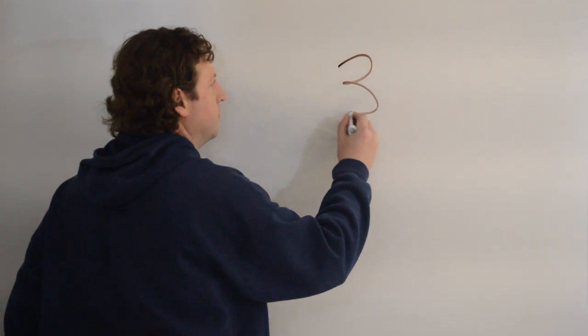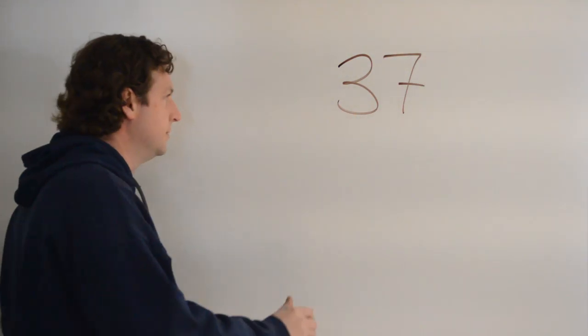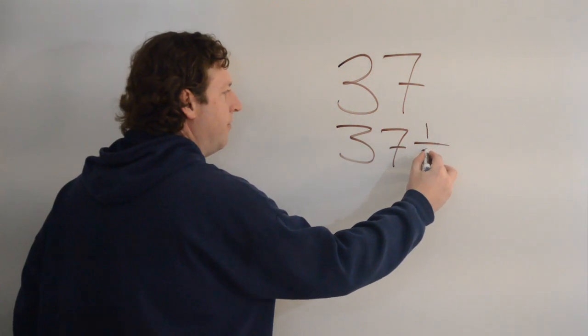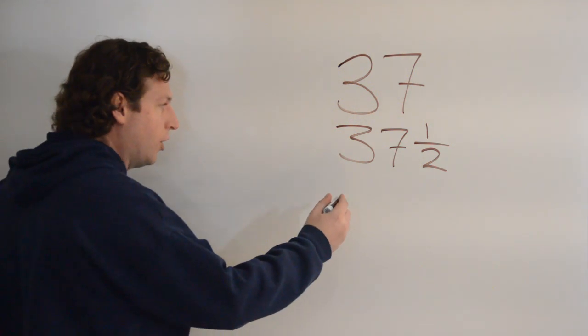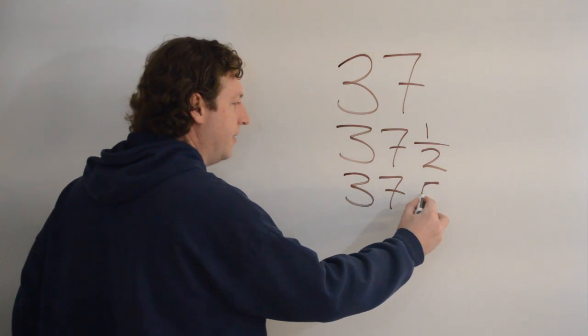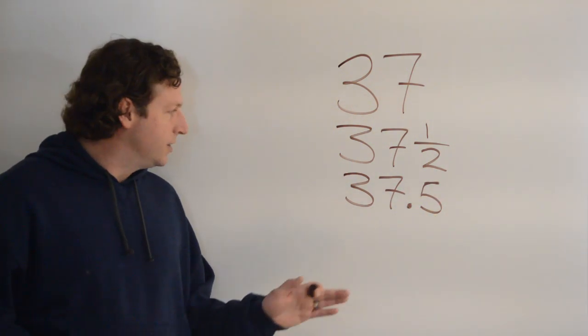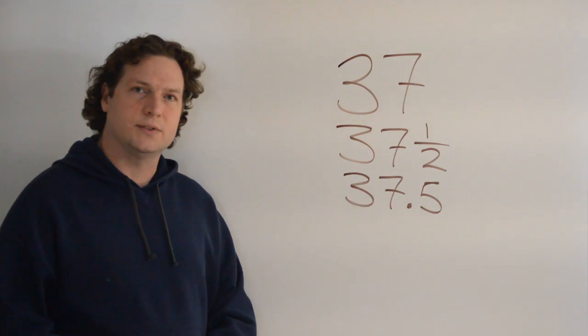Okay, let's look at the number 37. That is a whole number. If we were to write 37 and one half, that is a mixed number. If we wrote it in decimal form, 37.5, that is in decimal form. But it's also helping us just write part of a whole number. And that's why we have decimals.